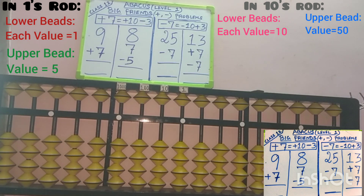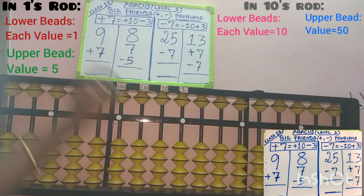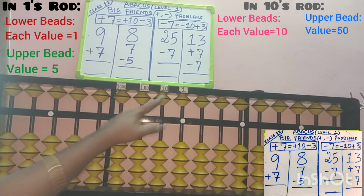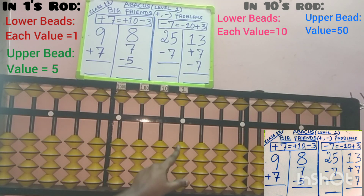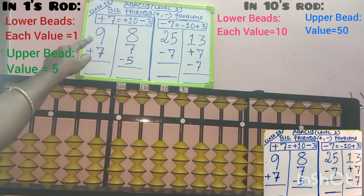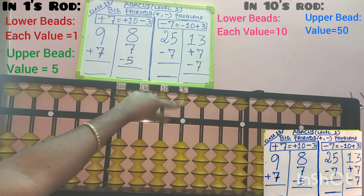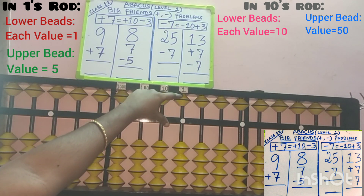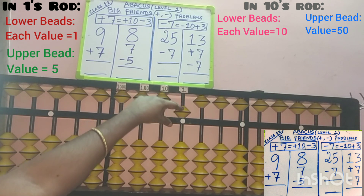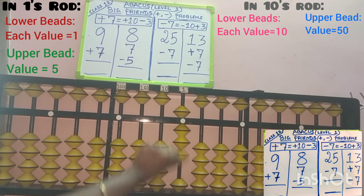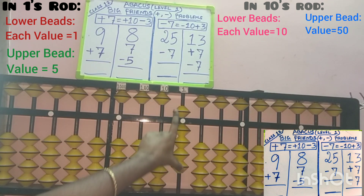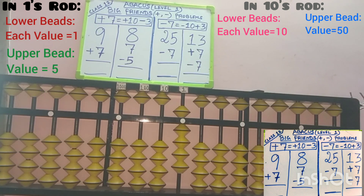Now we will do the first sum: 9 plus 7. 9 is a single digit number and its place value is 1s. So add 9 in the 1s place. In the lower part, only 4 beads are available but we have to add 9. So start from the upper part for adding 9 — its value is 5 — then 6, 7, 8, 9. 9 is added; first row completed.